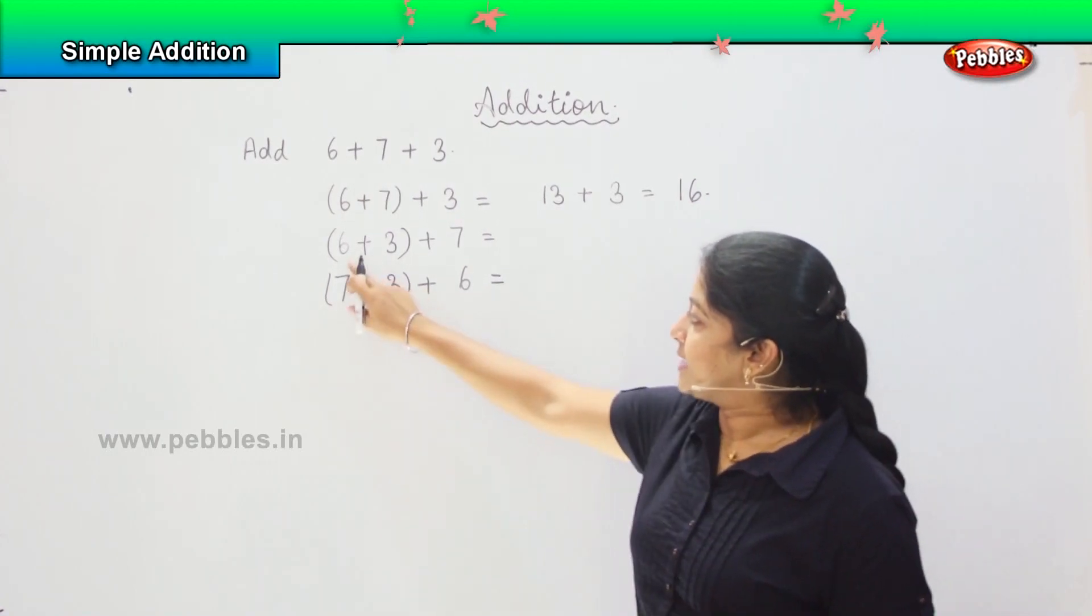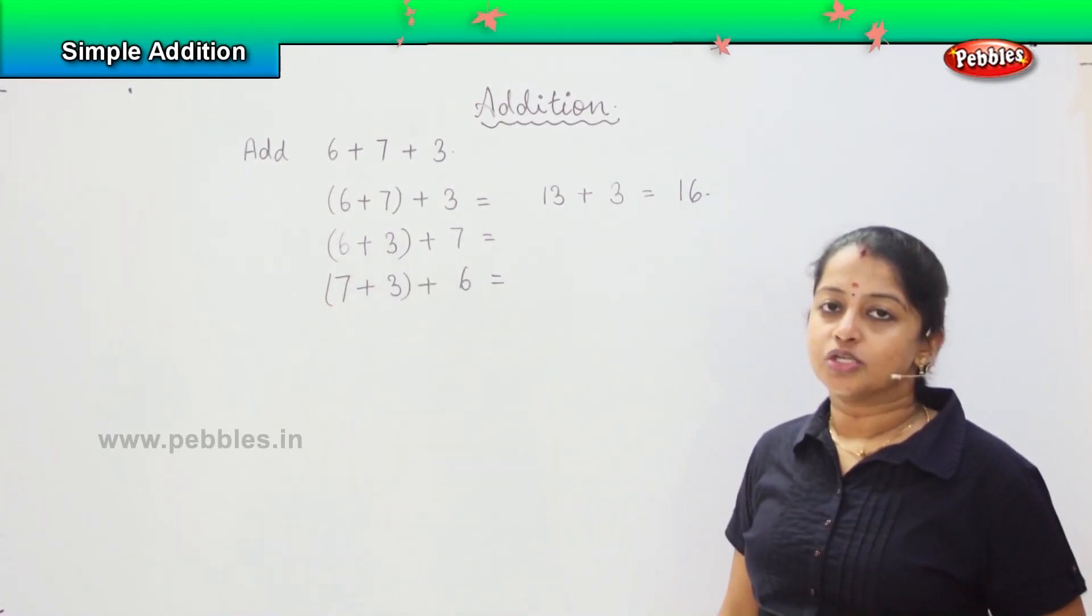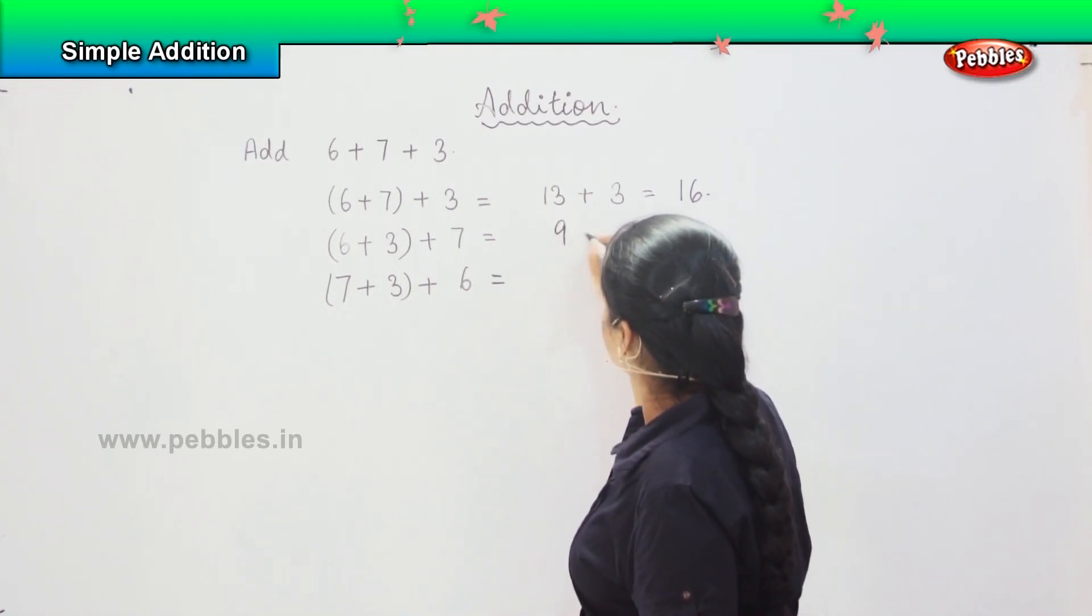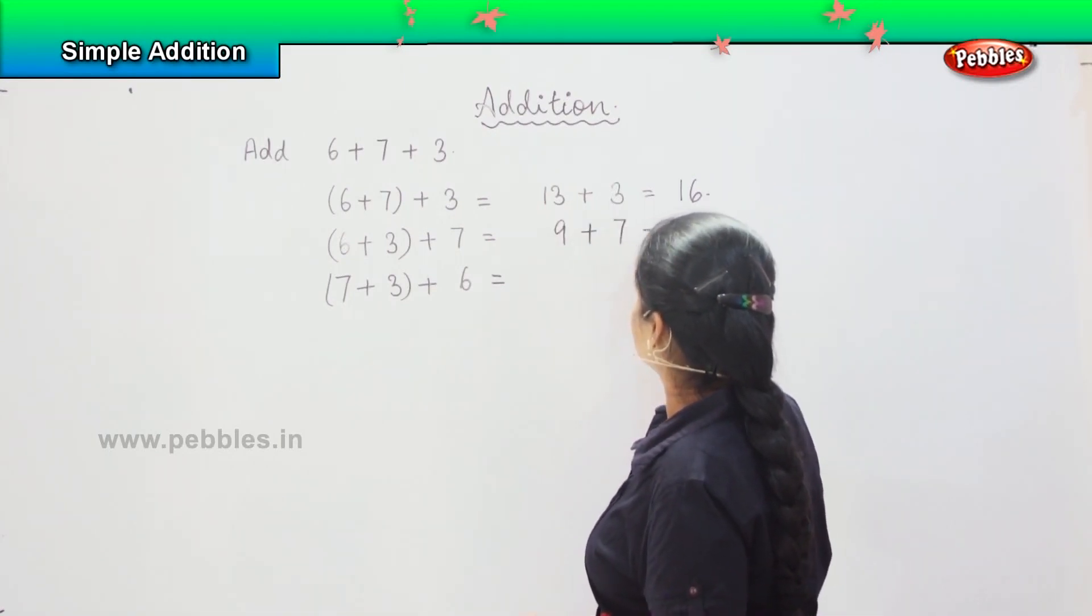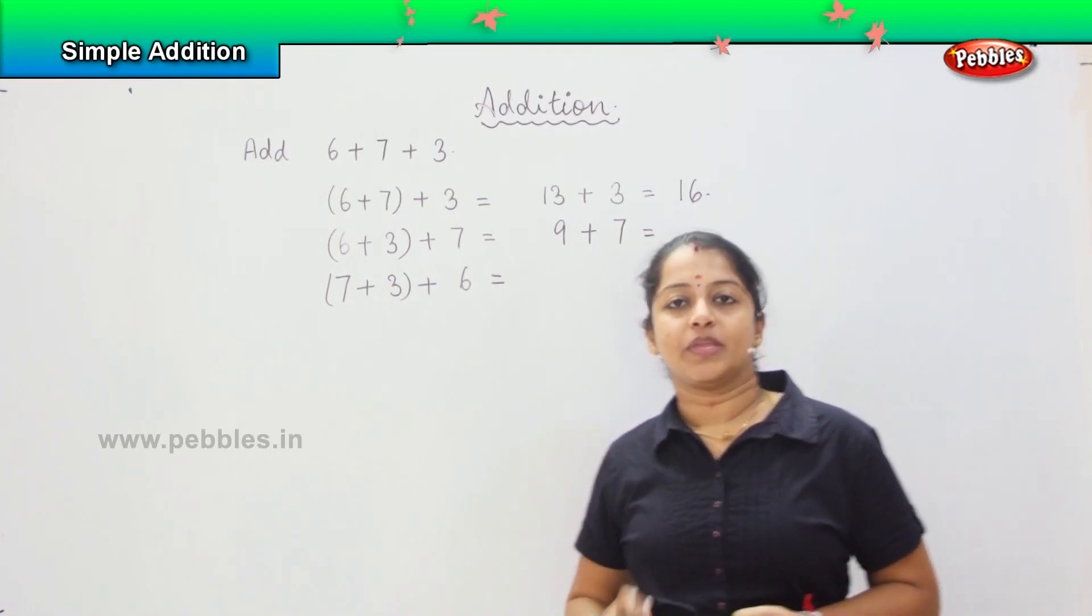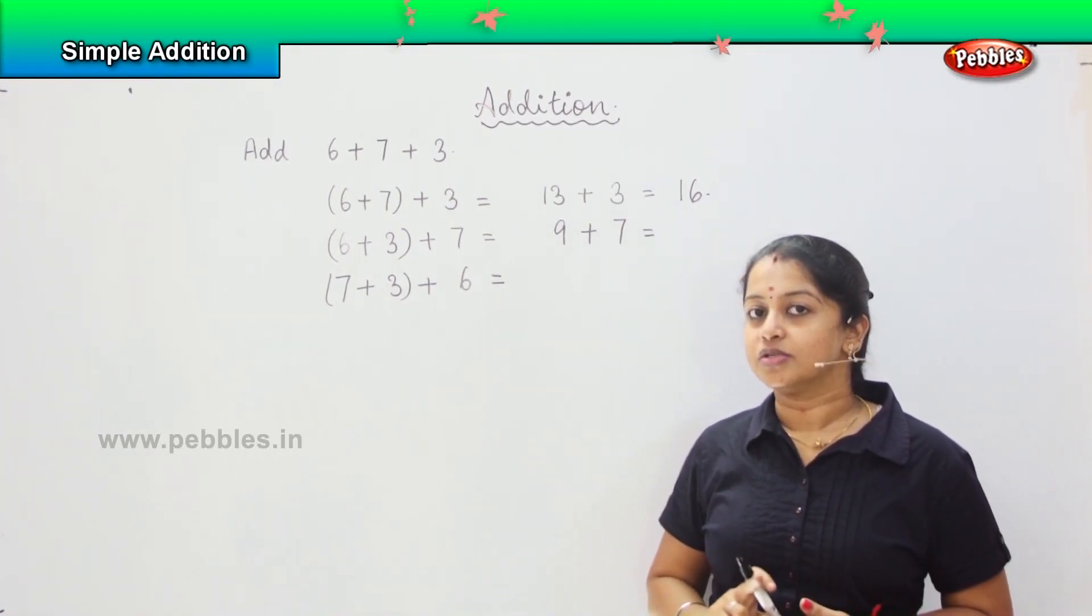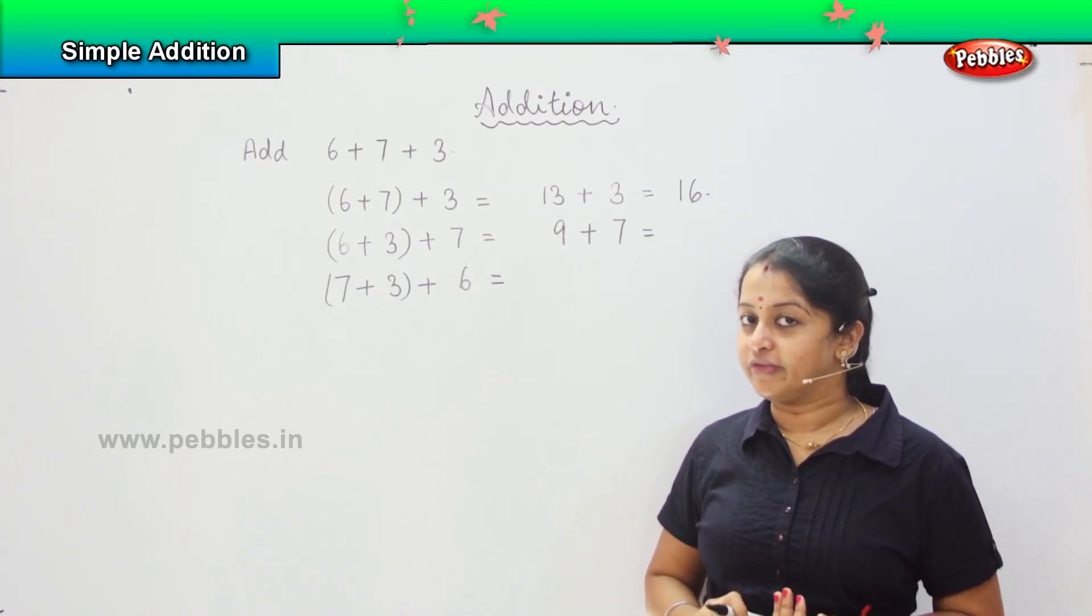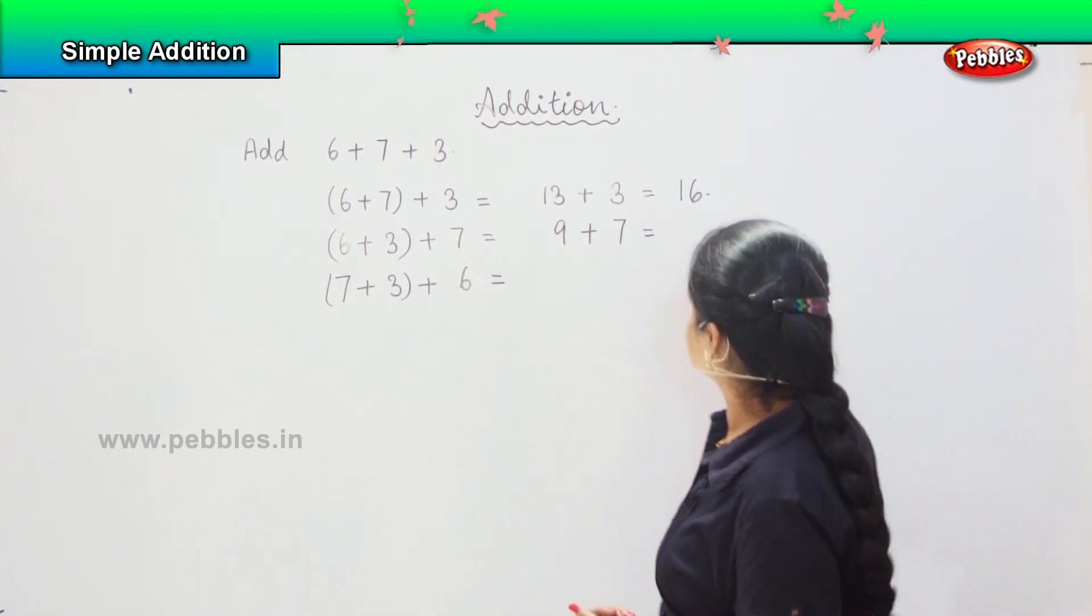Shall we do the next one? It says 6 plus 3. So after 6, 7, 8 and 9. So 9 plus 7, count 9 plus 7: 10, 11, 12, 13, 14, 15 and 16.